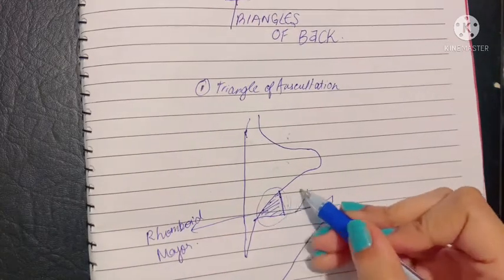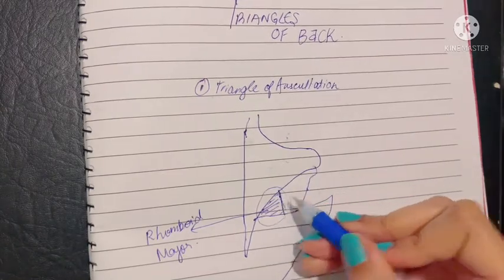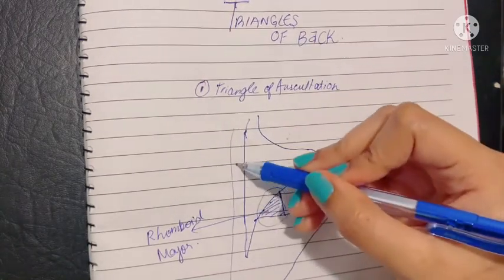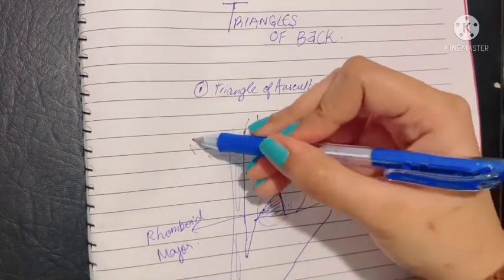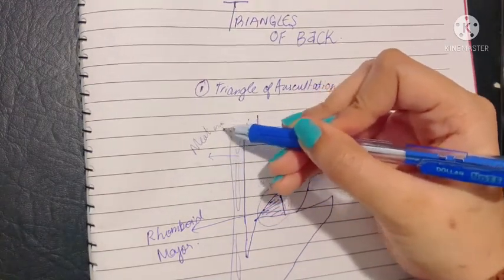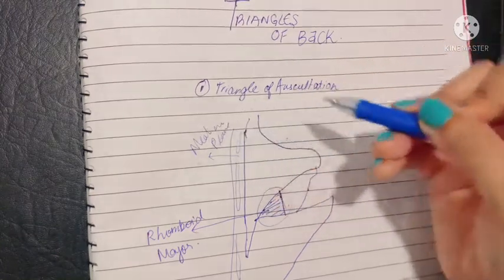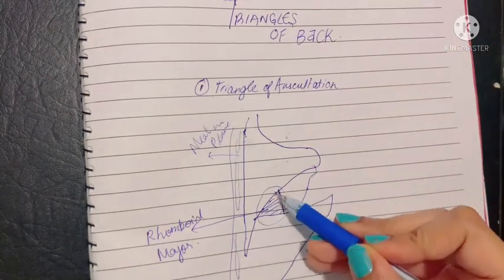This triangle is bounded by - this is the vertebral column where the median plane lies. So you can see this is the medial part of the triangle.